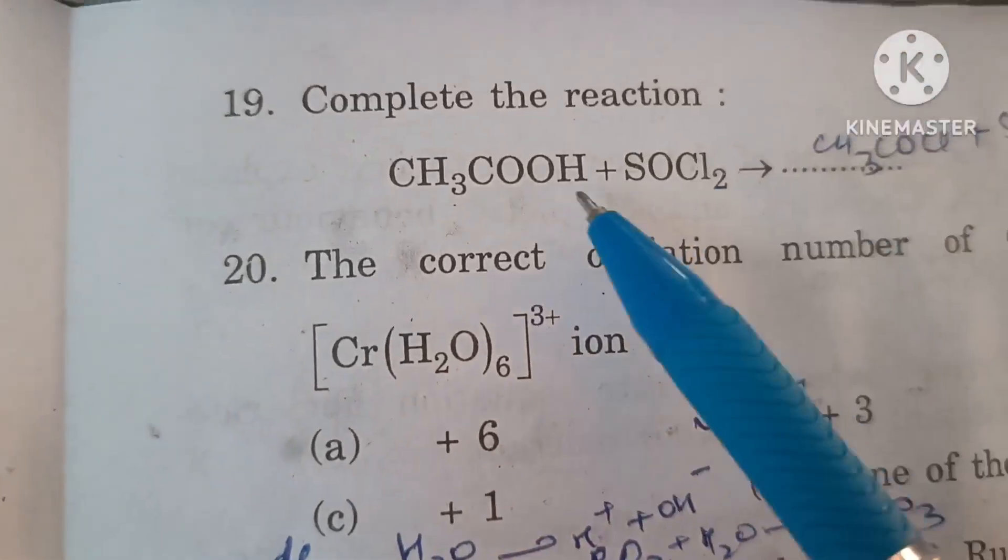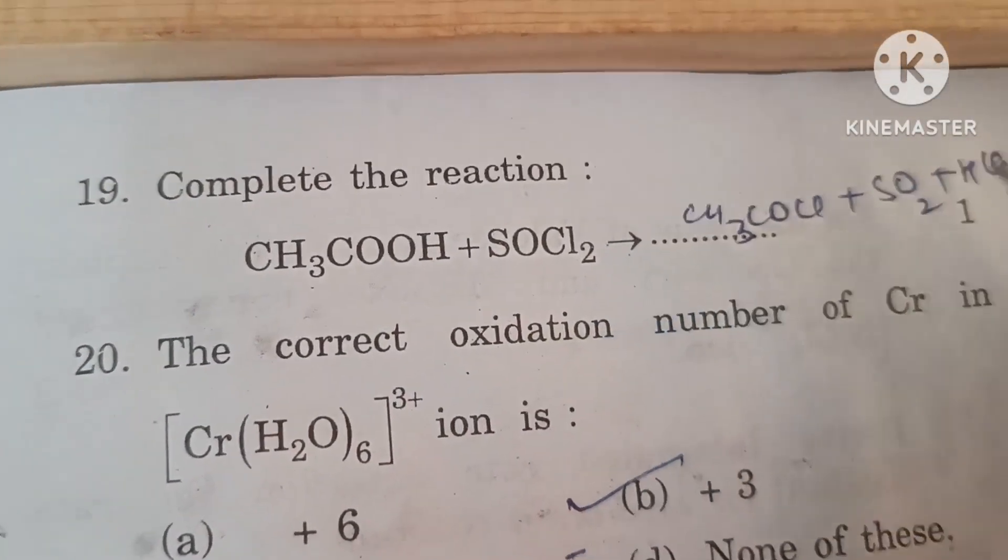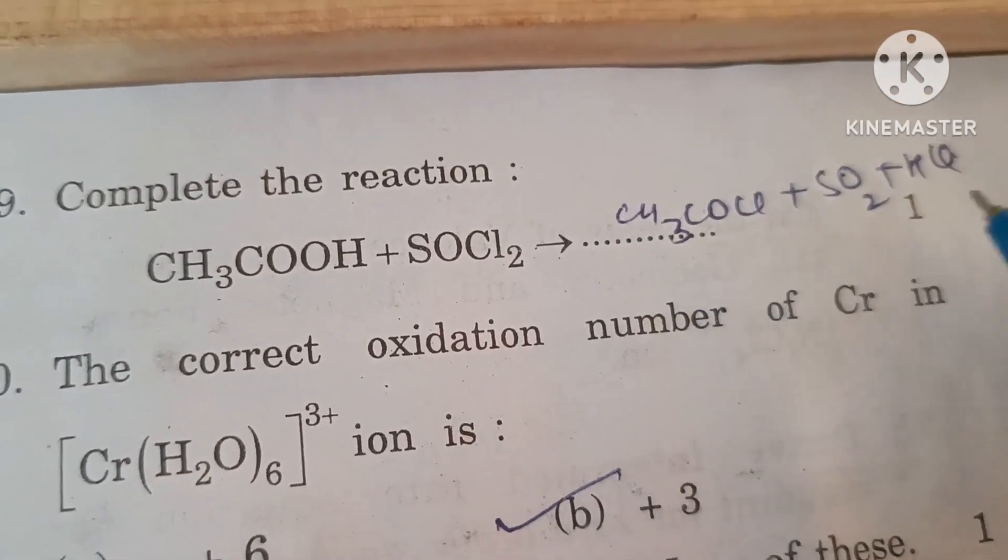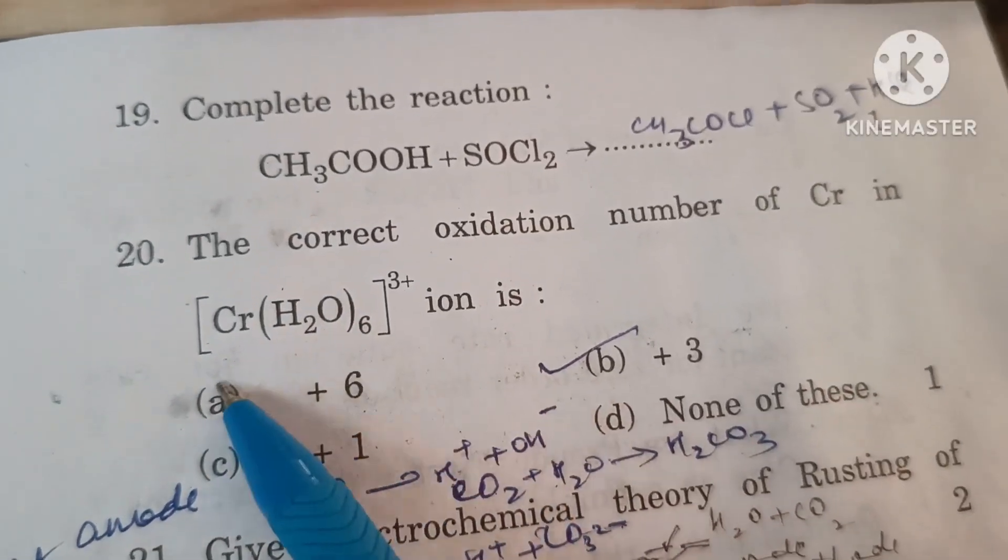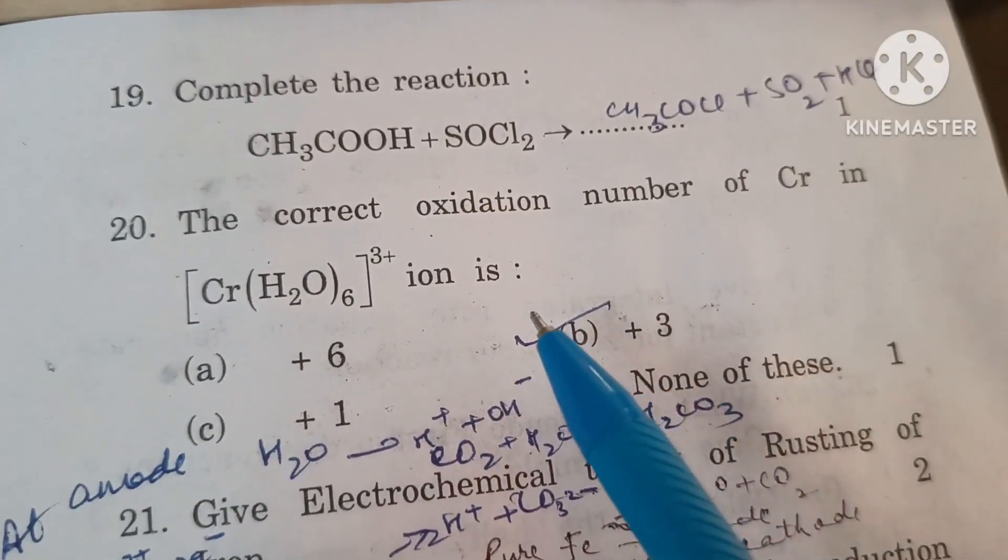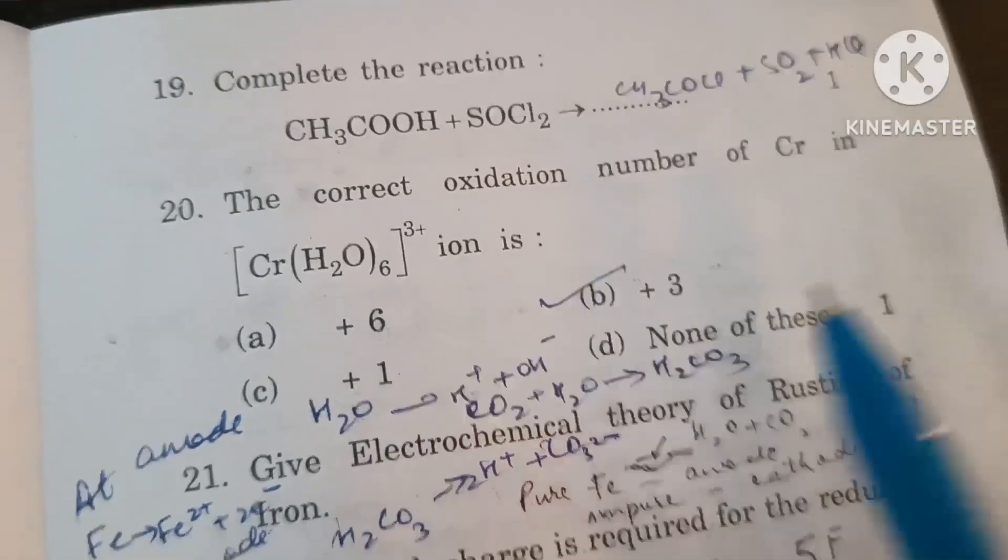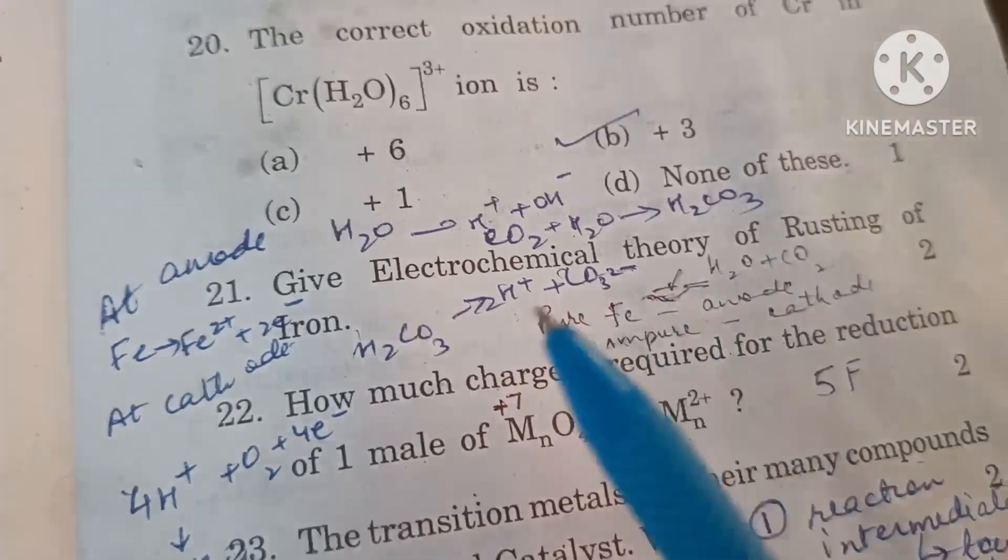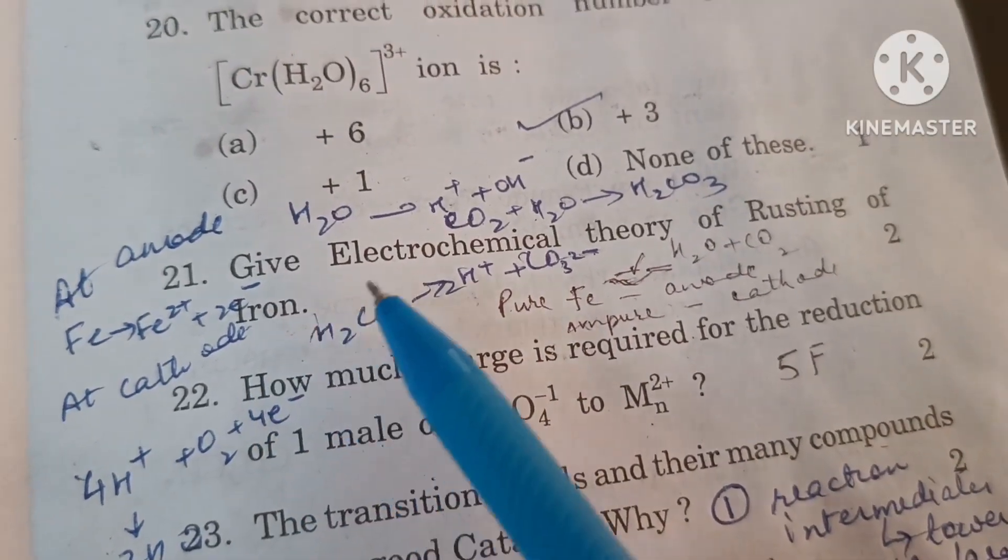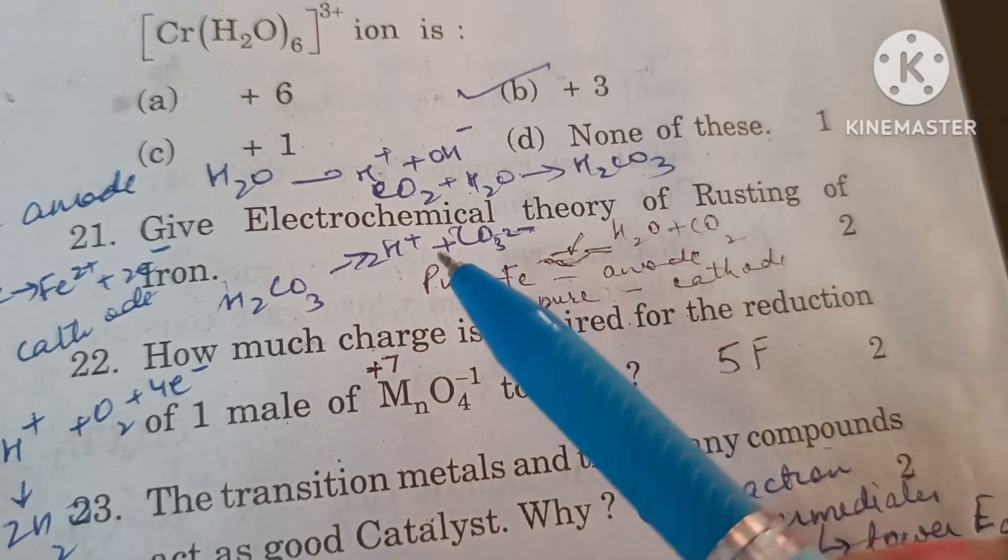Aldehydes are generally more reactive than ketones in nucleophilic addition reactions due to electronic and steric reasons. Complete the reaction: ethanoic acid plus thionyl chloride will give acetyl chloride plus sulfur dioxide plus HCl. Hexaaqua chromium(III) positive ion has the oxidation number +3.